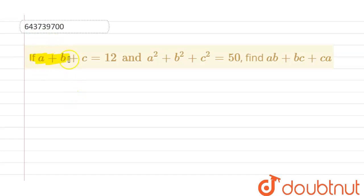We have the question in which if a plus b plus c equals 12, and a squared plus b squared plus c squared equals 50, then find the value of ab plus bc plus ca.